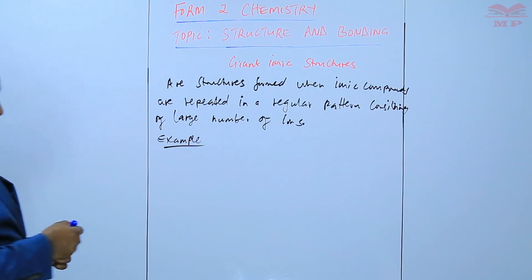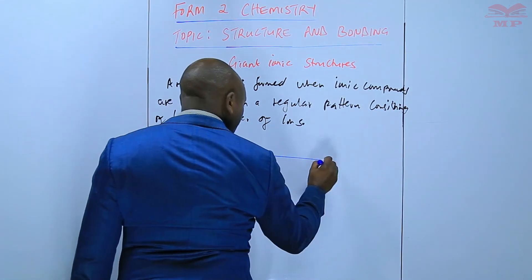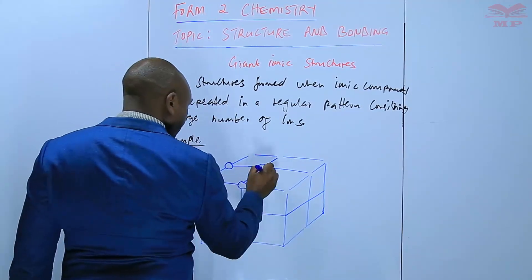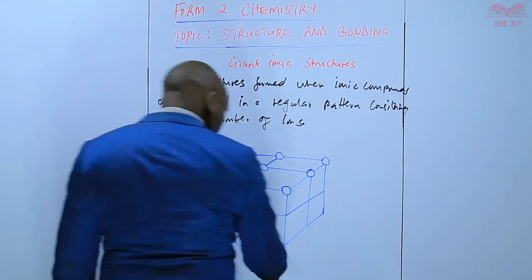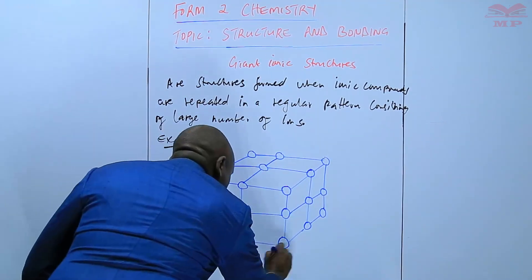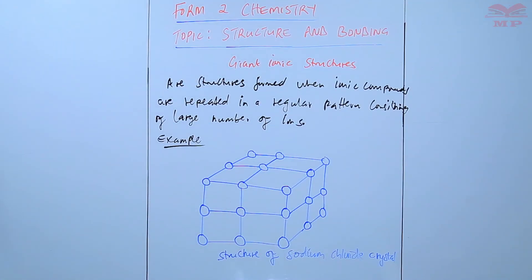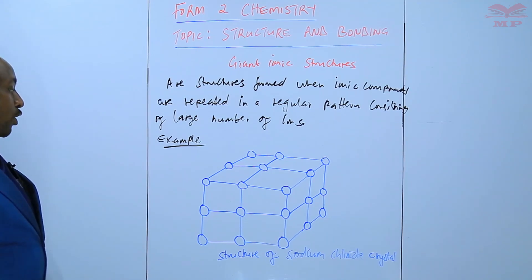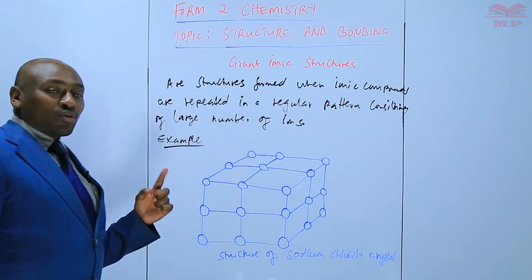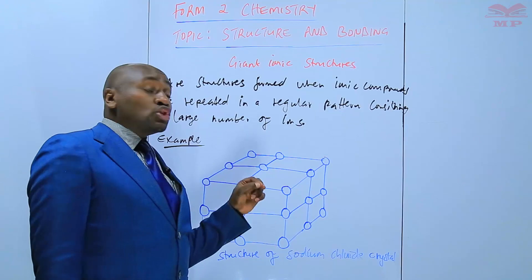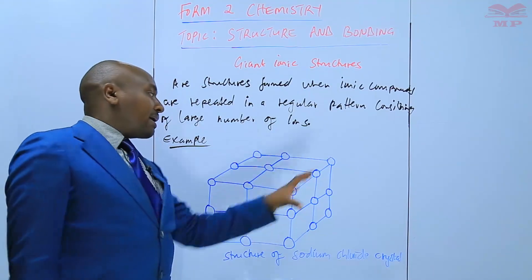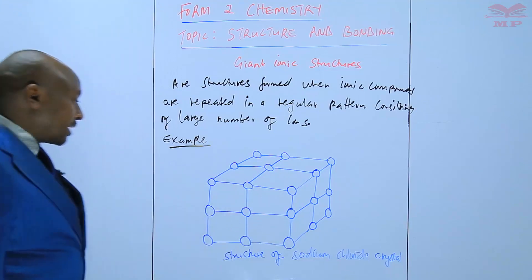We are going to look at the structure of sodium chloride crystal. This structure of sodium chloride crystal is three-dimensional. In this three-dimensional structure we find that each sodium ion is surrounded by six chloride ions, and each chloride ion is surrounded by six sodium ions in a repeated manner to form a three-dimensional structure.